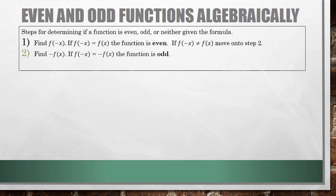For step 2, find the opposite of f of x — in other words, negative f of x. If f of negative x equals negative f of x, then the function is odd. We've already found f of negative x, and a function is odd if that equals the opposite of f of x. Step 3: if that's not the case, then we can say that the function is neither.